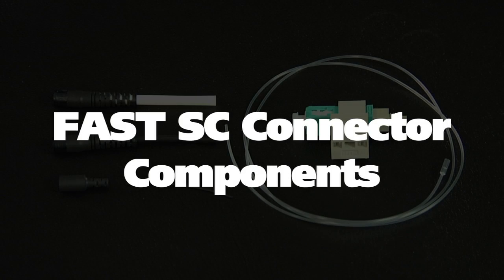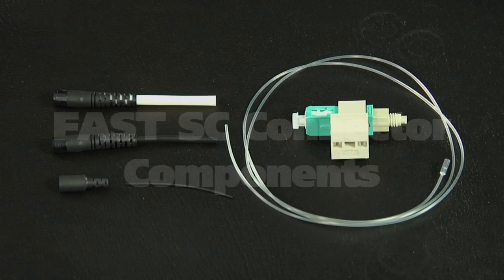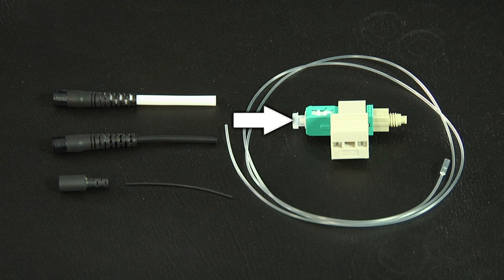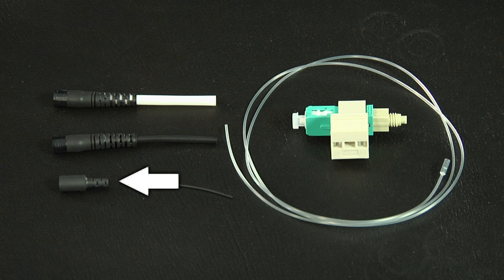The Fast SC connector components: Fast SC connector assembly, a 250 micron protective tube, a clear protective tube, a three-millimeter boot, a two-millimeter boot, and a 900 micron boot.